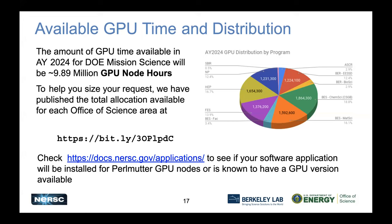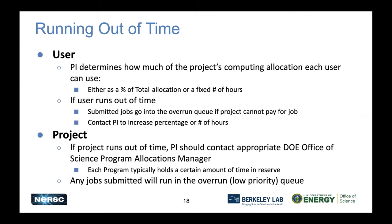You can run out of time in two ways. A PI can allocate a user either a percentage of the project's total time or a fixed number of hours. If a user runs out of their allocated time, they can still submit jobs to the overrun queue, but should contact their PI for an increase. If the entire project runs out of time, the PI will need to contact the appropriate DOE Office of Science Program Manager to request additional time. Even if the project runs out of time, jobs can still be submitted to the overrun queue.